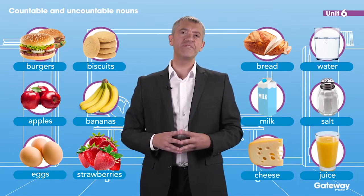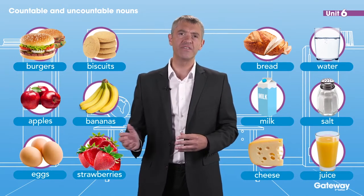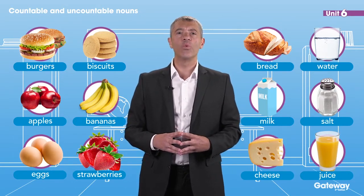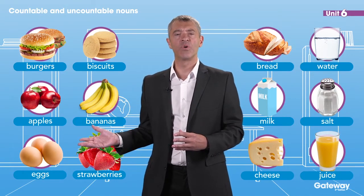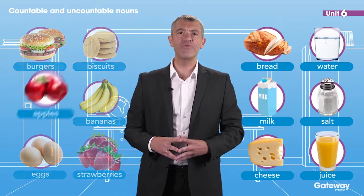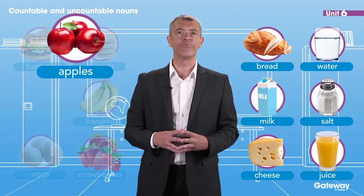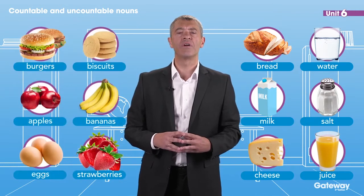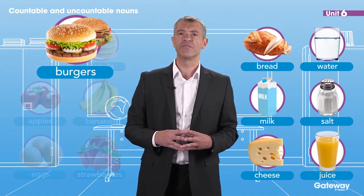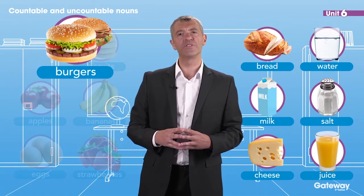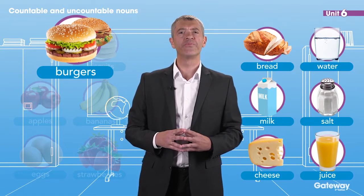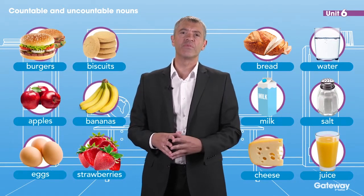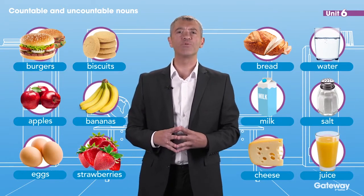So, what's the difference between the things on this side and the things on the other side? Well, we can count the things here. We have three apples, for example. There are six strawberries and two burgers. The burgers look good. But we can't count the things on this side. These things are uncountable.